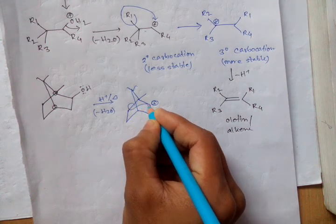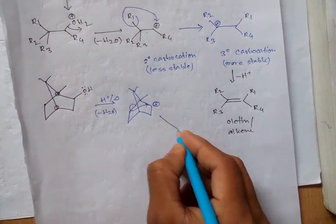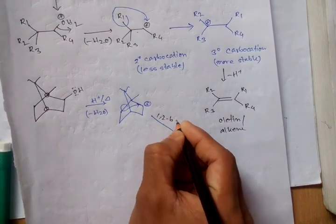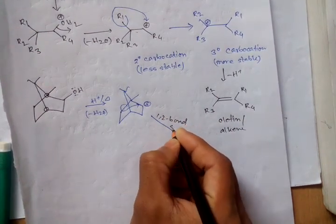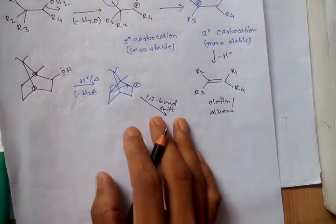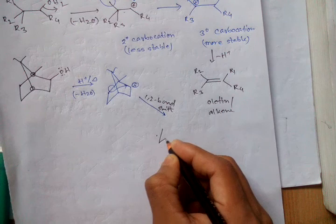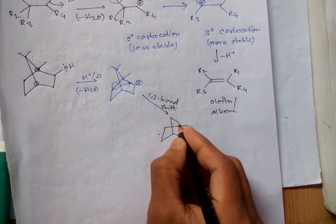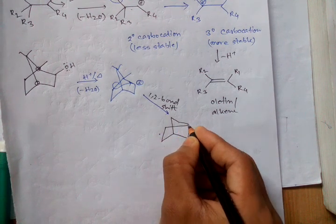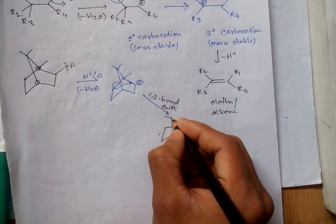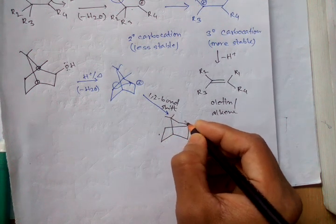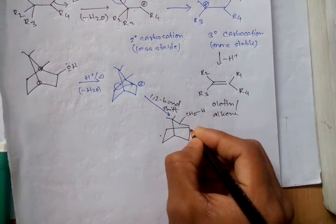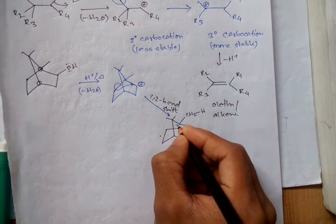When this one shift here, that is 1, 2, 1 shift. To give... Here, methyl. Here, also methyl group. That is CH2. And hydrogen. And here, positive charge generated.